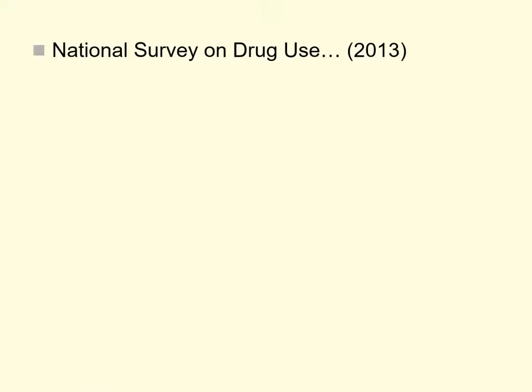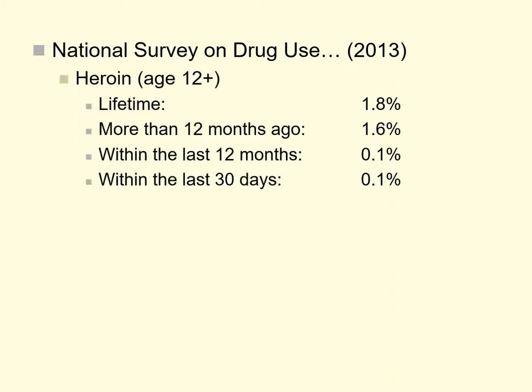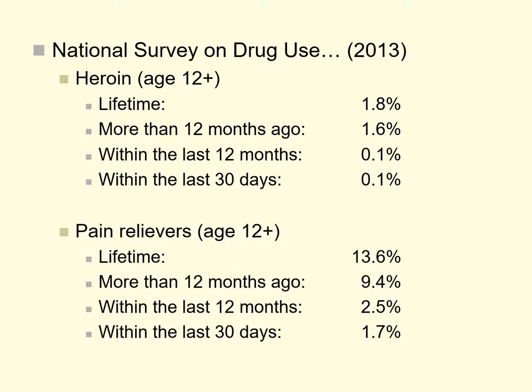Looking at the National Survey of Drug Use and Health — data published to 2013 — for heroin across the entire population aged 12 or older, the lifetime prevalence is around 1–2%. Not many people report use within the last year or last month. But for prescription pain relievers, the lifetime prevalence is upwards of 14%, with a fair number of people reporting use within the last year or even the last month — a really big difference.